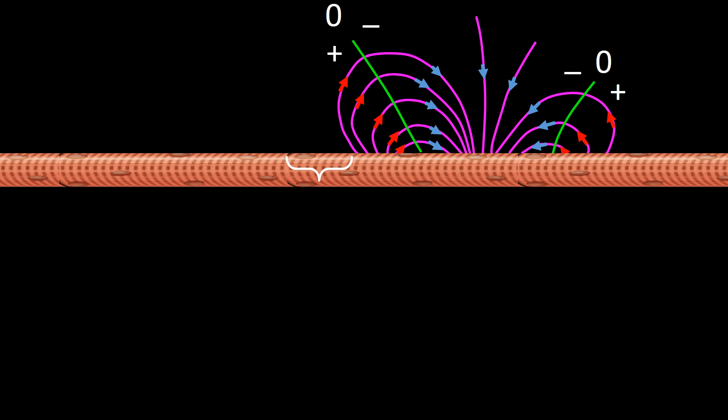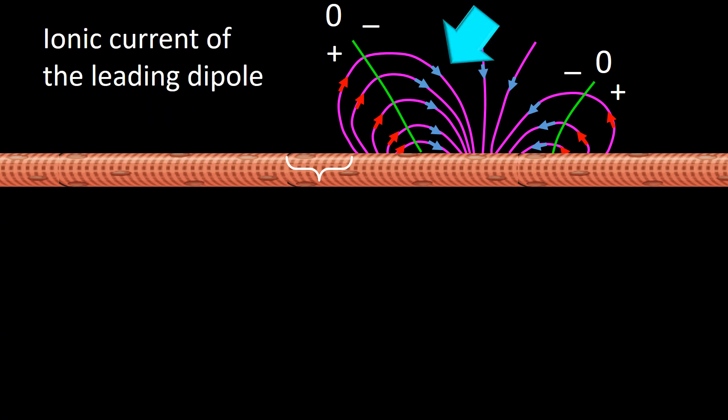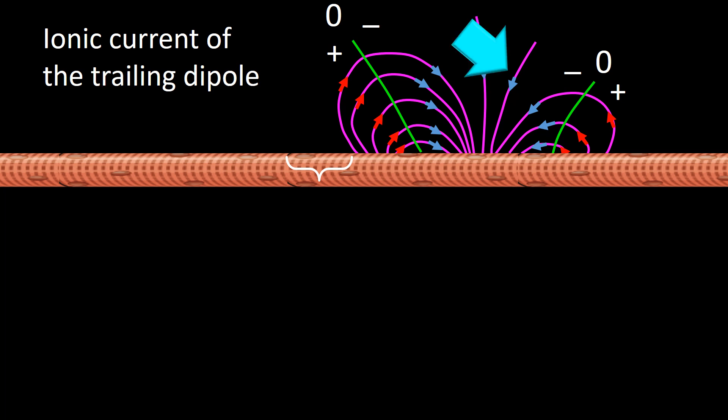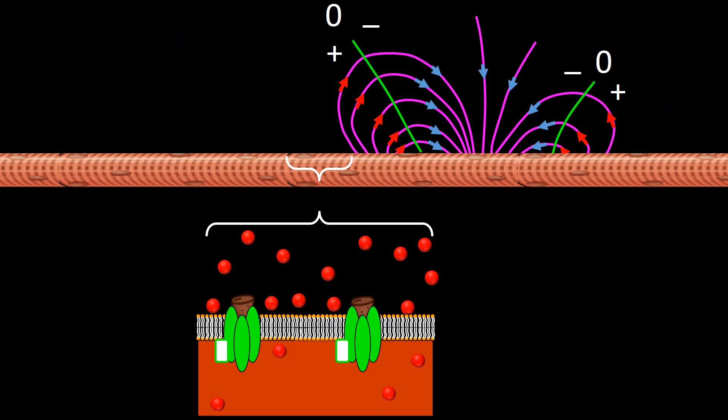The different elements of the quadrupole are: the capacitance current of the leading dipole, the ionic current of the leading dipole, the ionic current of the trailing dipole, and the capacitance current of the trailing dipole. The drawing introduced shows the components of the membrane needed to summarily explain the changes associated with the different elements of the advancing quadrupole.